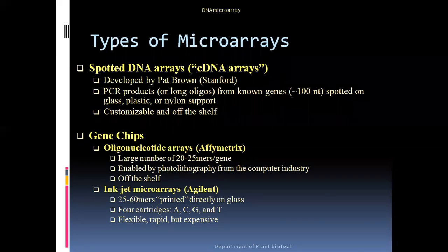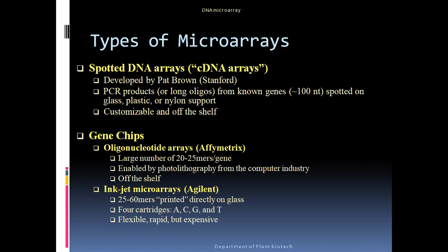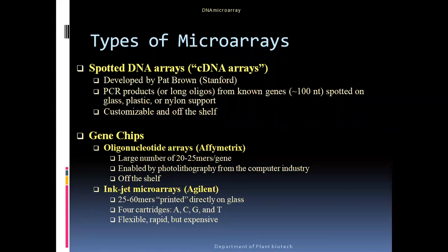Spotted DNA arrays are generally customizable — we can customize them according to our needs. But oligonucleotide arrays from Affymetrix and Agilent companies are mainly fixed for the individual. Spotted DNA arrays are generally very cheap in nature, whereas gene chips containing oligonucleotides and inkjet arrays are very highly expensive. Gene chips also have an advantage in that they can be analyzed using computer software.